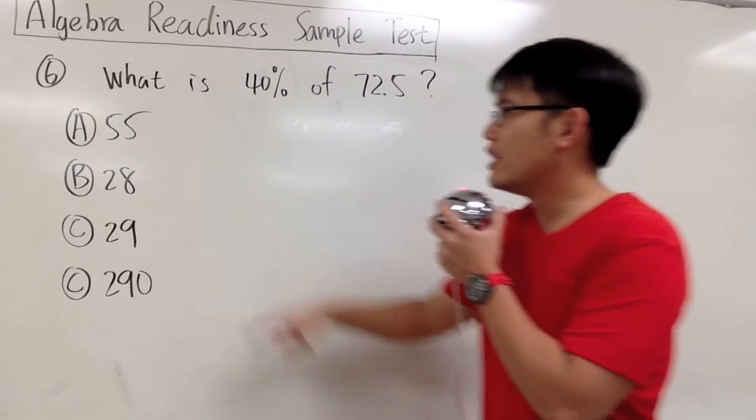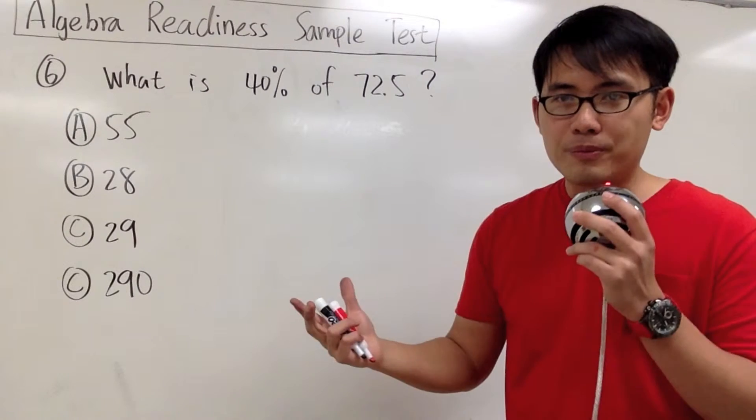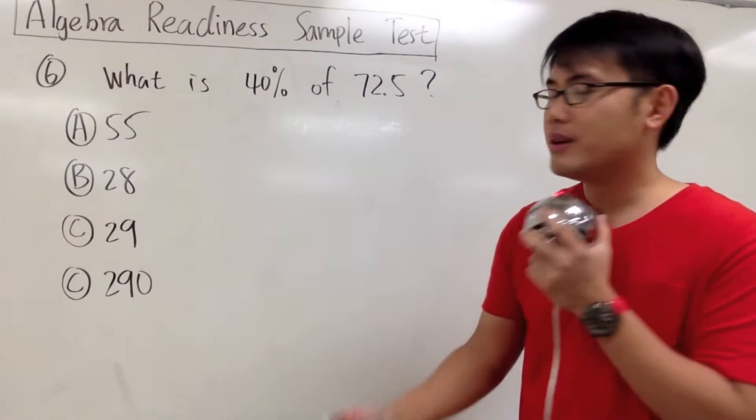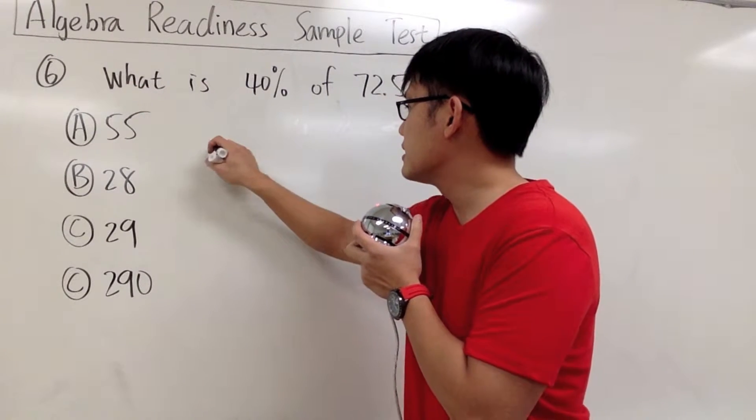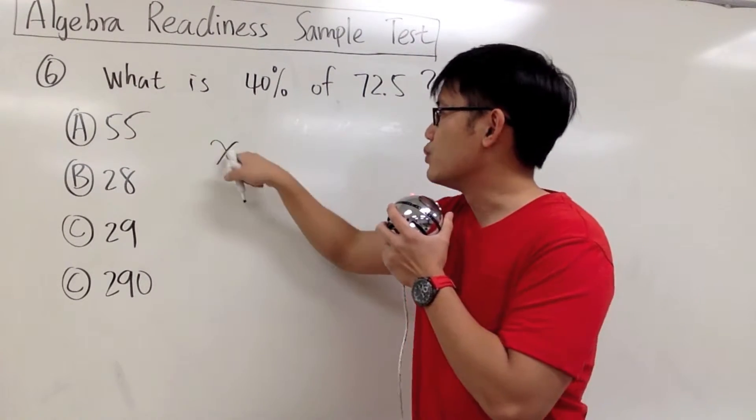To do that, we first notice the word 'what' - that's the unknown. In algebra, we use the letter x to stand for unknown. So we put down x for the word 'what', and we know x will be equal to